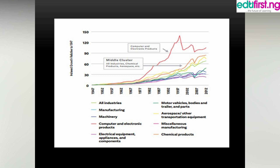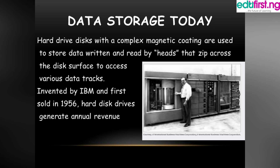Data storage is not left behind. Before, we had large storage facilities, but today we have nano storage tools like memory cards and SD cards, as a result of physicists putting these principles into practice. Hard drive disks with a complex magnetic coating are used to store data, read by a head that zips across the disk surface to access various data tracks. Invented by IBM and first sold in 1956, hard drive disks generate significant annual revenue. Industrial physicists have played a key role in commercializing fundamental discoveries such as precise tunnel junctions for reading data — the physics behind today's hard drives is fascinating.